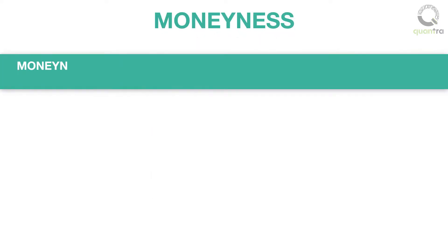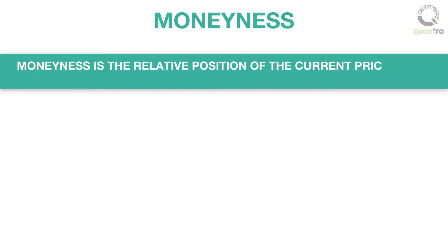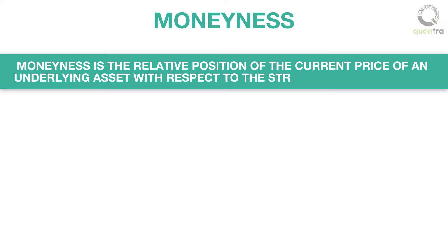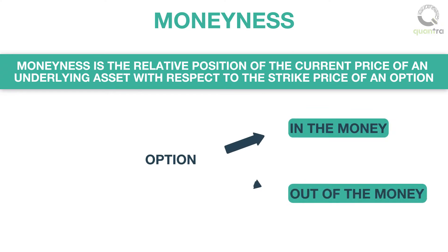Moneyness is the relative position of the current price of an underlying asset with respect to the strike price of an option. In other words, it tells whether the option is in the money or out of the money.